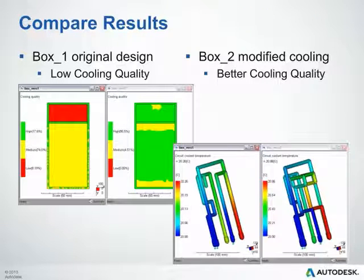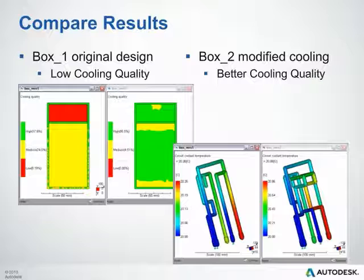Here's a simple example of how the cooling analysis can help improve part design. The original part design lacked adequate cooling in the deep draw, resulting in significantly poor quality in that region. By redesigning the cooling line layout to focus additional cooling down into that pocket, the cooling quality improved significantly, resulting in a better quality part.